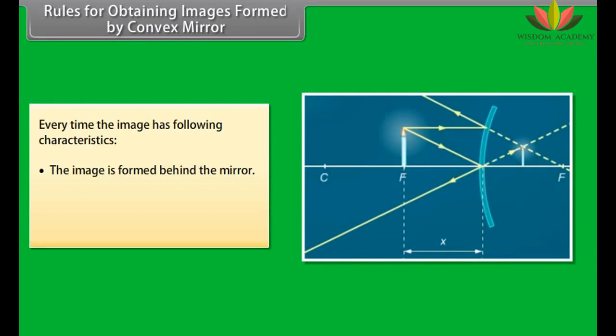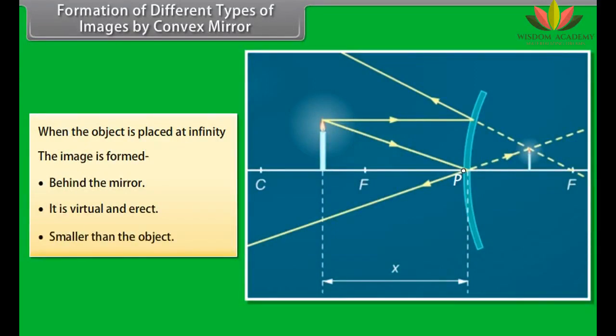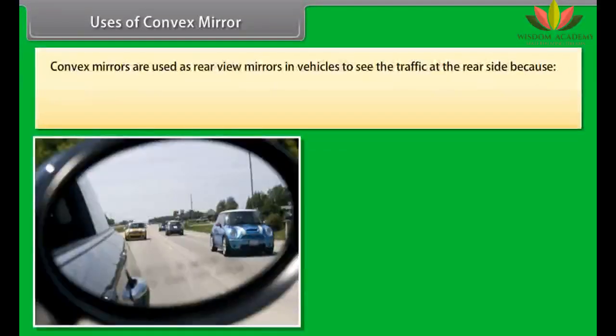For a convex mirror, every time the image has the following characteristics: the image is formed behind the mirror, it is virtual and erect, and smaller than the object. When the object is placed anywhere between pole P and infinity, the image is formed behind the mirror, virtual and erect, and smaller than the object. Convex mirrors are used as rear-view mirrors in vehicles to see traffic at the rear side, because they always produce an erect image, the size of image is small, and we can see a wide field of view of traffic behind.